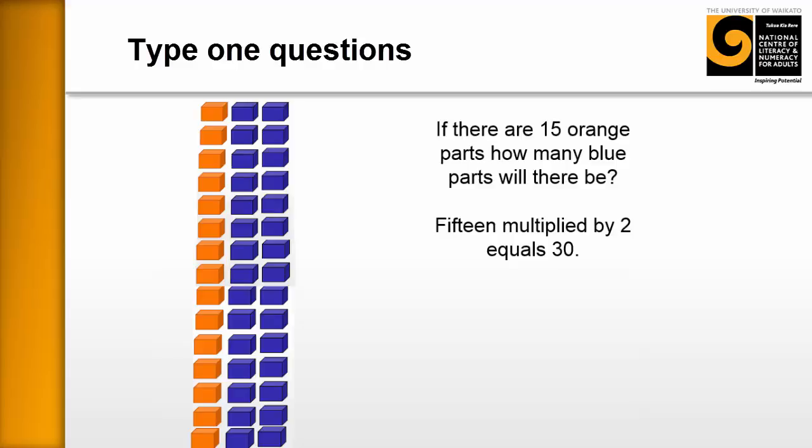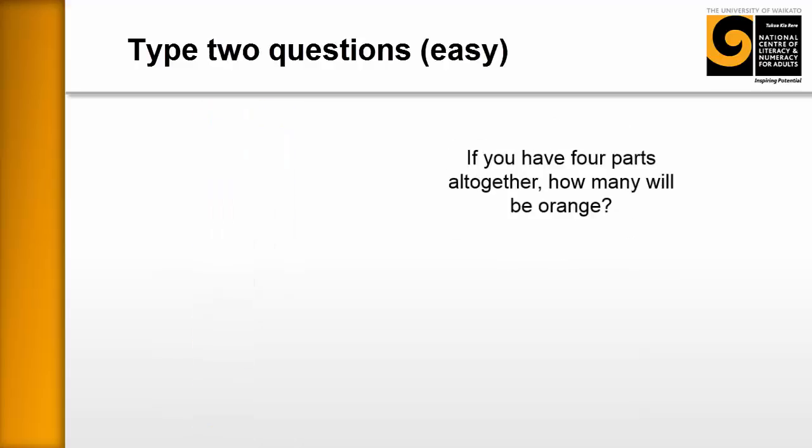Now that's an example of the type one questions. That's simply where you tell them if one part is orange, how many parts will be in the other side and so on. They're the easier questions. And now we're going to move on to the type two questions.